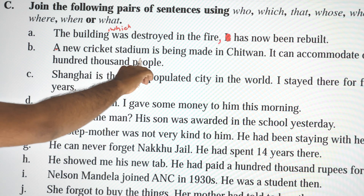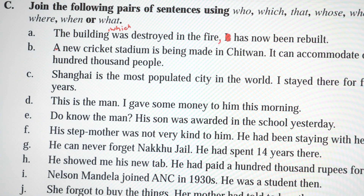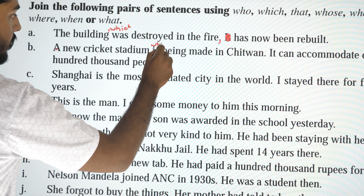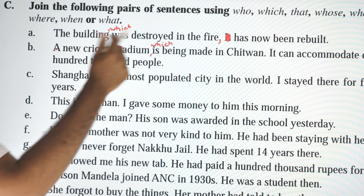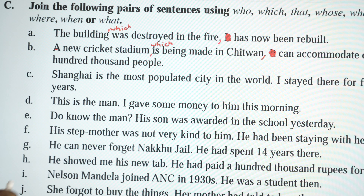Next pair: 'A cricket stadium is being made in Chitwan. It can accommodate 100,000 people.' Combined: 'The new cricket stadium, which can accommodate 100,000 people, is being made in Chitwan.'